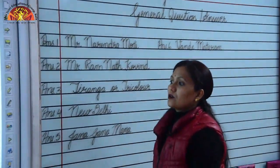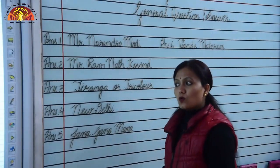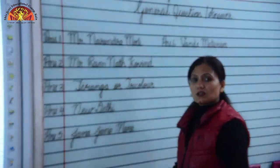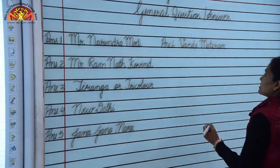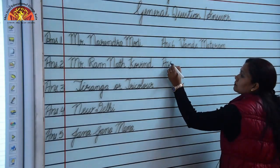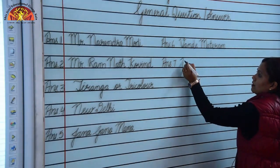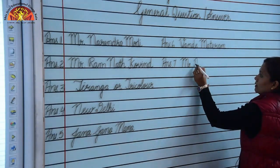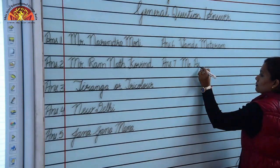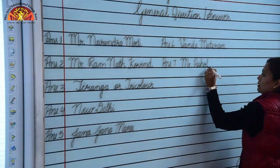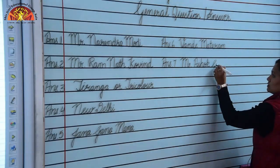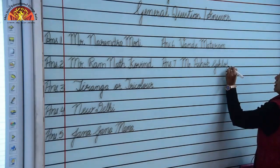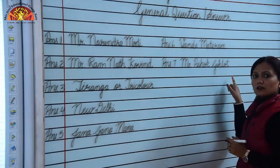Question 7: Who is the Chief Minister of Rajasthan? Mr. Ashok Gehlot is the Chief Minister of Rajasthan. Spelling of Gehlot: G-E-H-L-O-T. Mr. Ashok Gehlot.